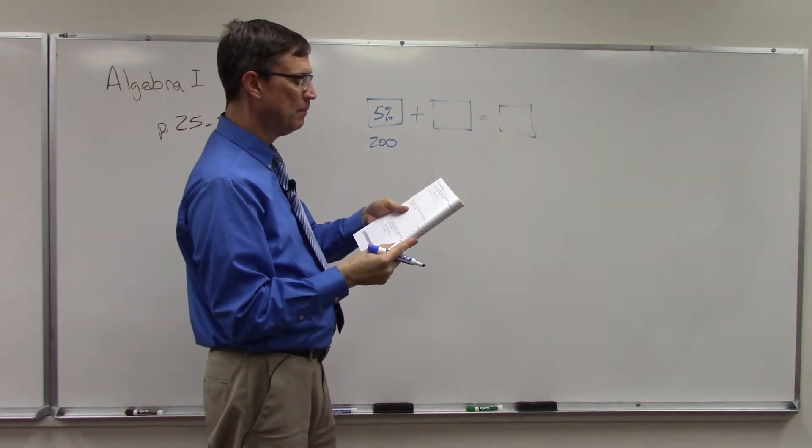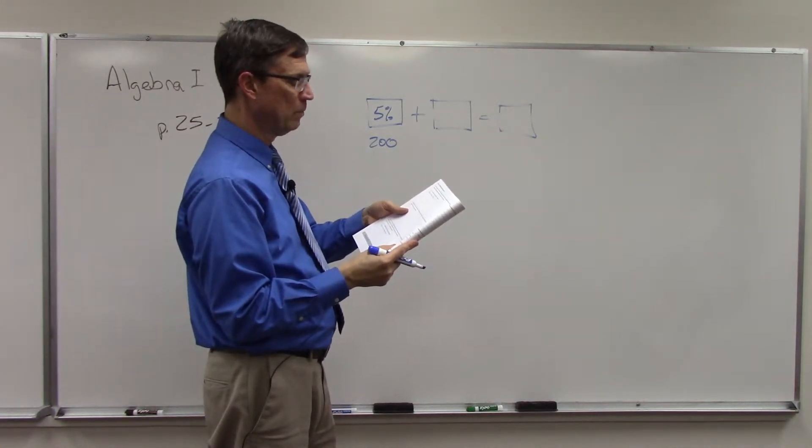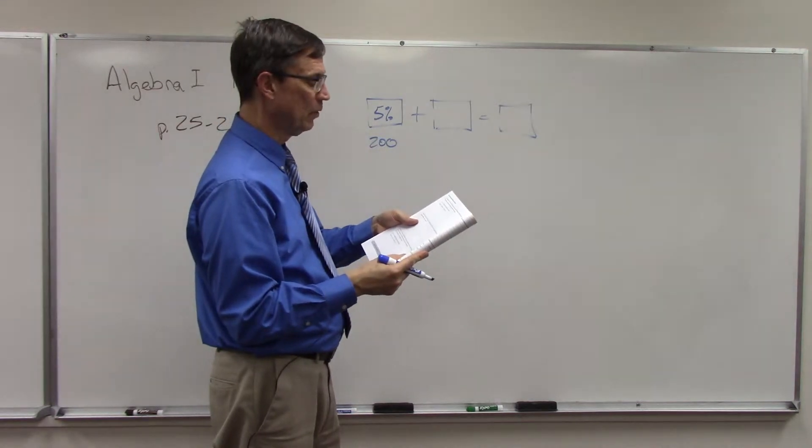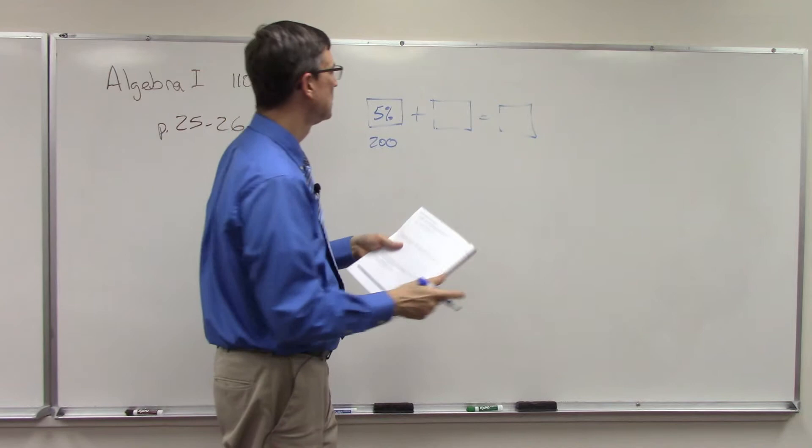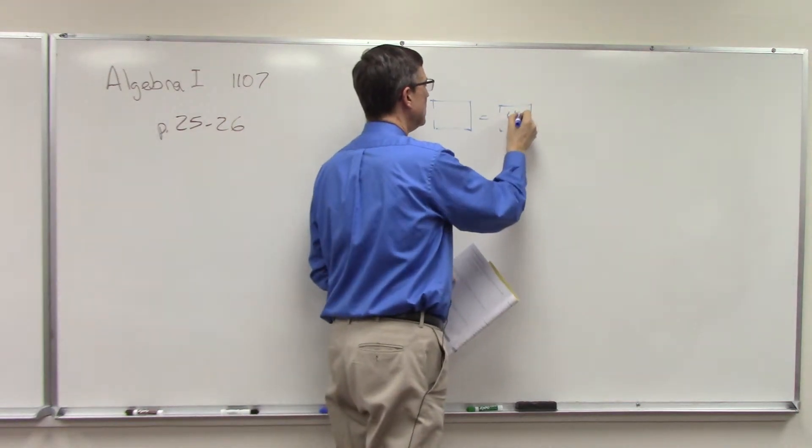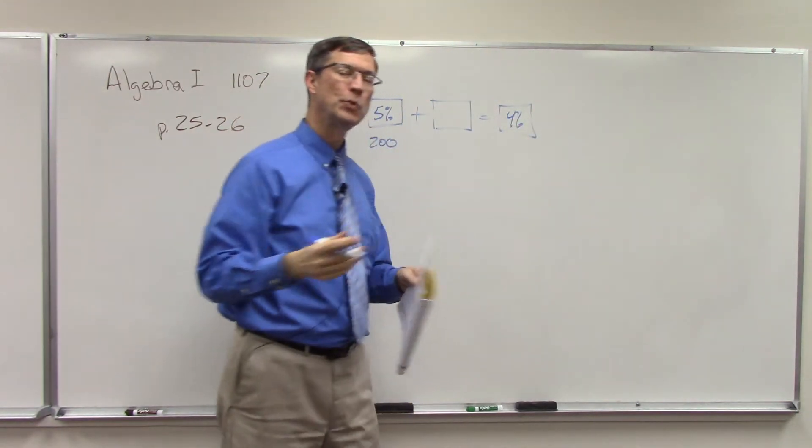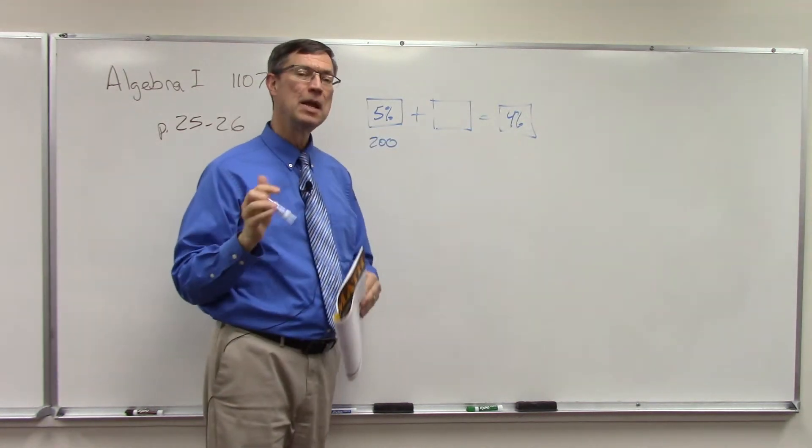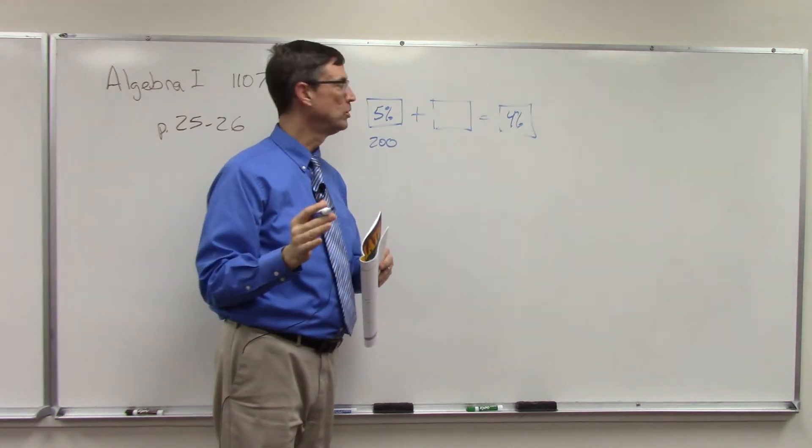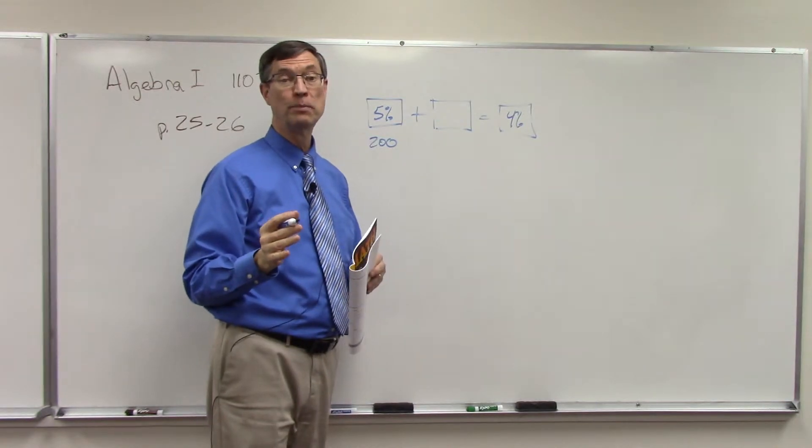How many liters of skim milk, which is 0%, which is why I don't like skim milk, must be added to make milk that's 4%? So basically what we're doing is we're diluting. This is nice rich milk, 5%, and we're trying to dilute it down to 4%.